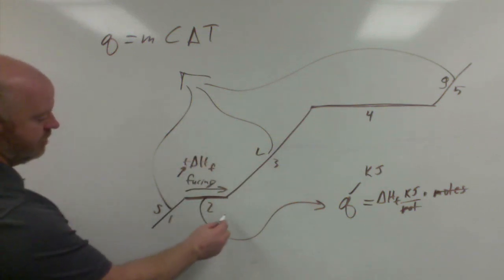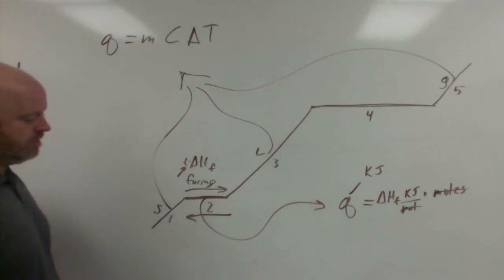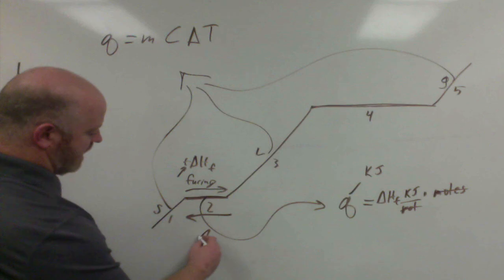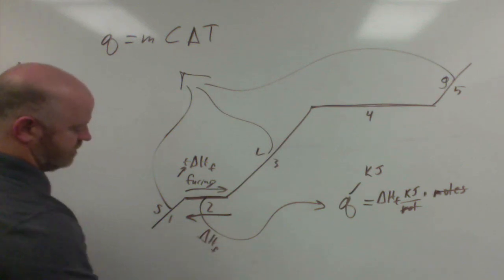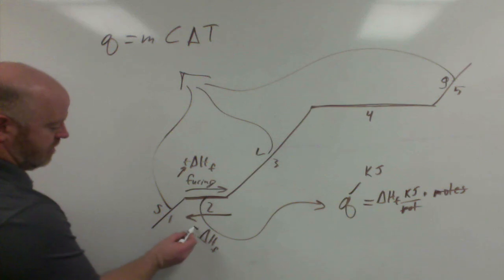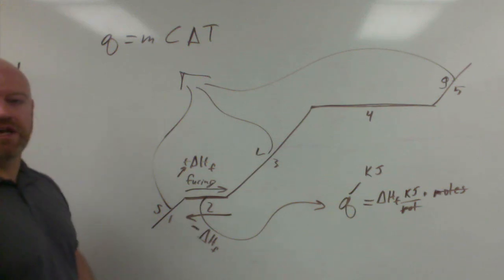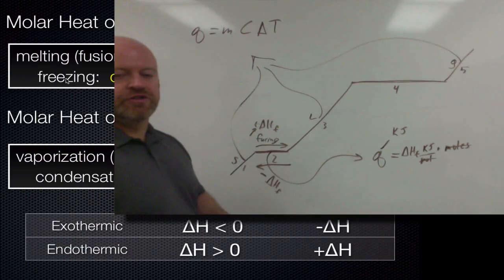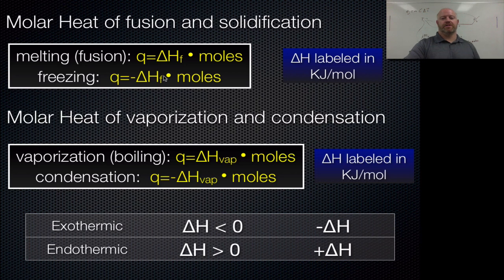However, if we were going this direction on the curve, we're freezing something, which means you're releasing energy. So the same amount of energy change is present, but because we're exothermic, we now make that value negative instead. So as you see on the screen, two equations, the only real difference is we have negative sign for freezing because this will be a negative value instead.